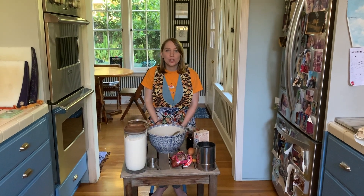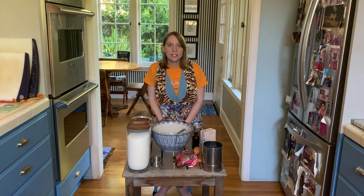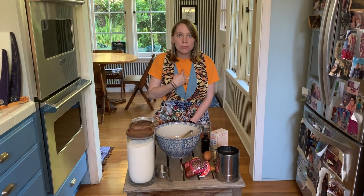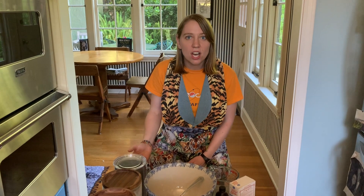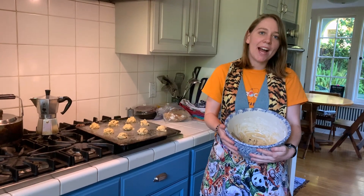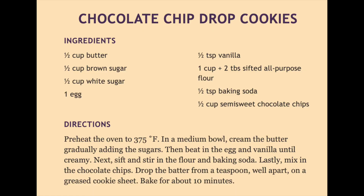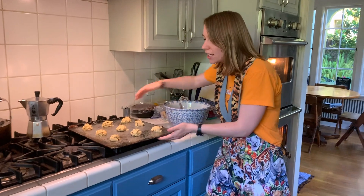Hey there! Welcome to Everyday Science with Astro Camp. I'm Charlotte and today we're gonna be learning about the chemistry of baking cookies. Why does square cookie dough turn out round? What makes some cookies chewy and others cakey or crispy? The answer, of course, is science. I just whipped up a batch of my favorite cookie dough, chocolate chip. Let's see what happens to the cookies in the oven.